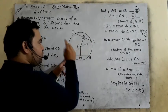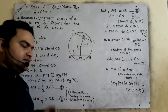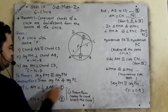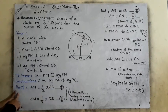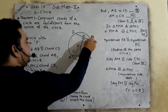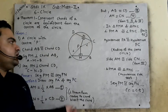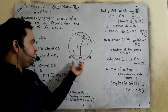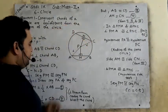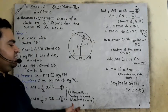Therefore PA is congruent to PC, because they are radii of the same circle. Now we will prove that AM is half of chord AB, and similarly CN is half of CD, because a perpendicular drawn from the center to a chord bisects the chord. So AM is half of AB and CN is half of CD. This result we know.